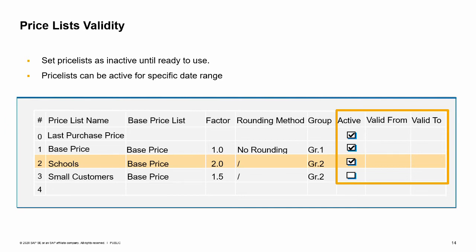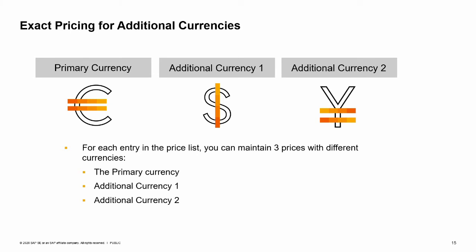For other windows such as the item master data, the system date is used for the comparison with the price list date range. A price list can be deactivated at any time, even if it is already assigned to a business partner. For each entry on the price list, you can maintain up to three prices with different currencies: the primary currency and two additional currencies. This is useful when you want an exact price in a different currency rather than depending on the currency conversion done inside a document. You can maintain pricing in alternate currencies not only at the item level but also for each unit of measure. The additional currency fields are hidden initially, but you can display them using form settings.